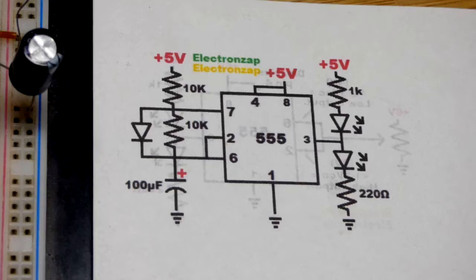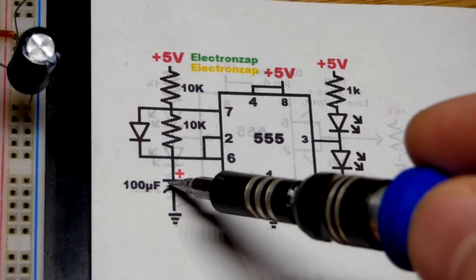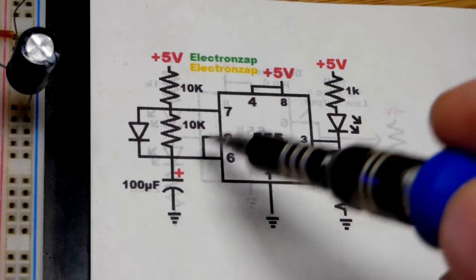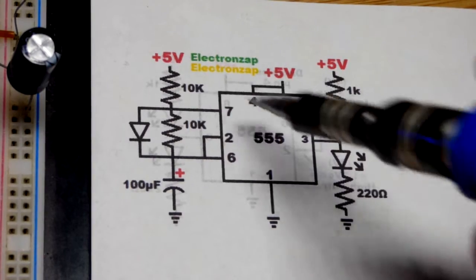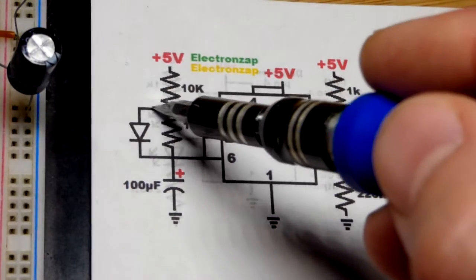When you first apply power to the circuit, the capacitor is less than one-third of the supply voltage, so pin 2 tells the output to go high. At the same time, the capacitor starts to charge.